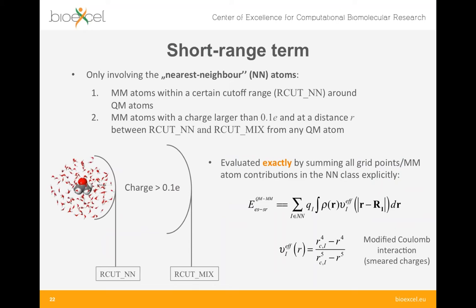All this is achieved through a hierarchical approach in dealing with electrostatic interaction between quantum and classical atoms. Specifically, the QM/MM electrostatic energy is split into three contributions: a short-range, a medium-range, and a long-range one. Despite the names, the three regions are not identified solely by distance from the QM part. The short-range term involves only the nearest neighboring classical atoms — those MM atoms within a certain adjustable cut-off range RCAT_N around the quantum region — but also classical atoms with a charge larger than 0.1 times the electron charge at distances between the previous cut-off and the larger user-defined cut-off RCAT_MIX. For those MM atoms, the QM/MM interactions are evaluated exactly: the QM charge density is mapped to a real-space grid and all Coulomb interactions between each grid point and the nearest-neighbor atoms are evaluated and summed.